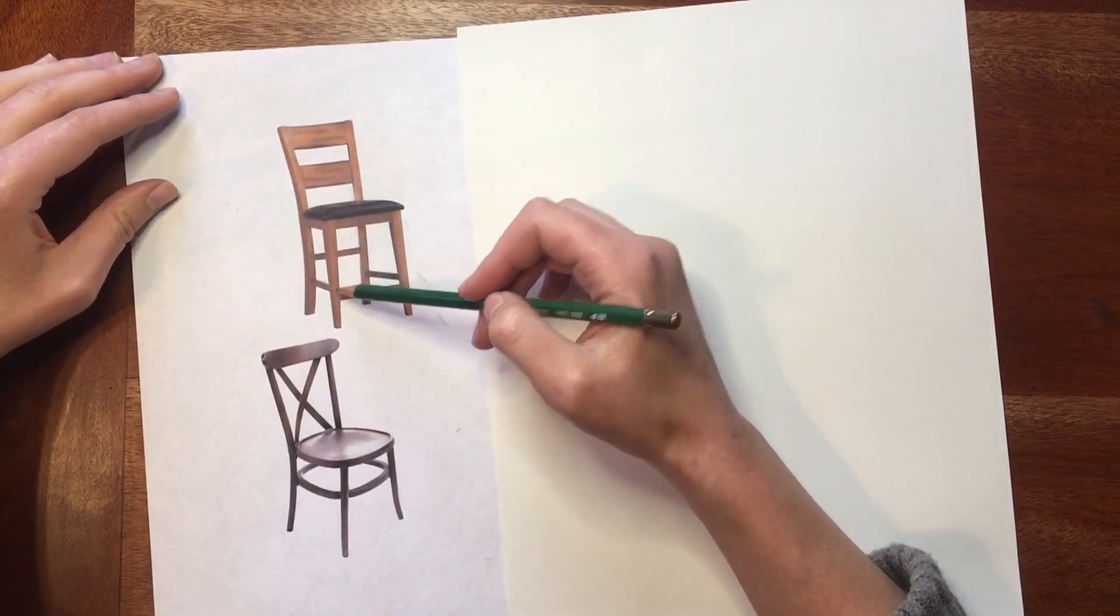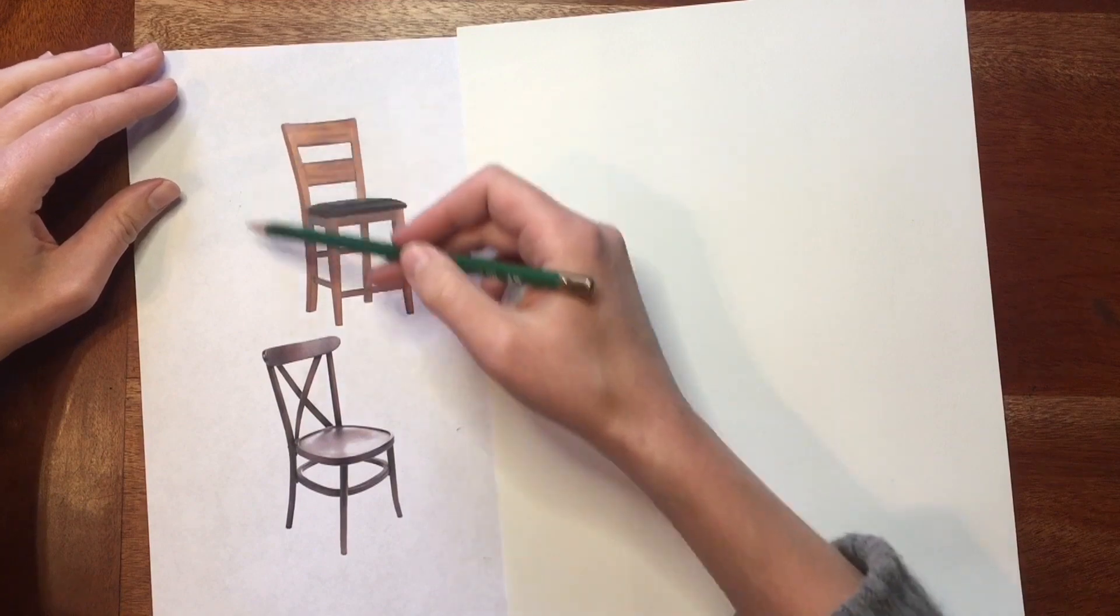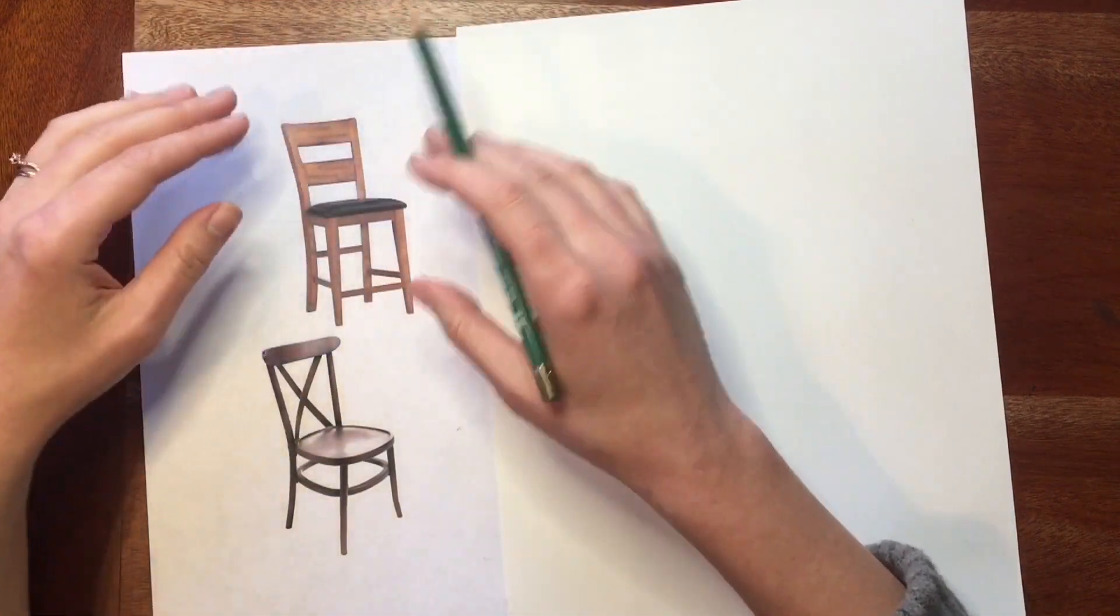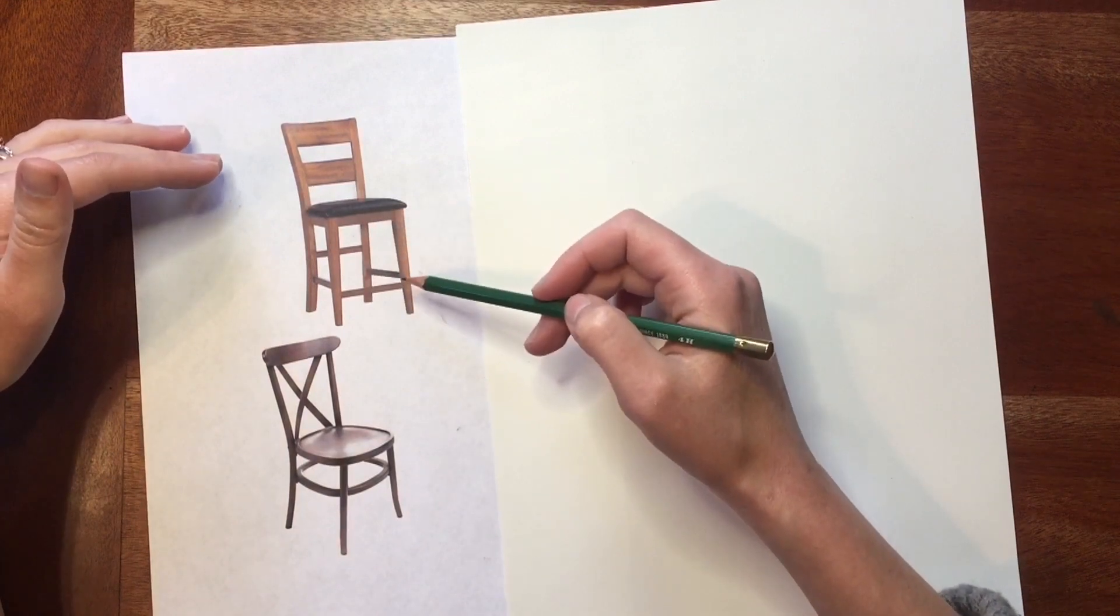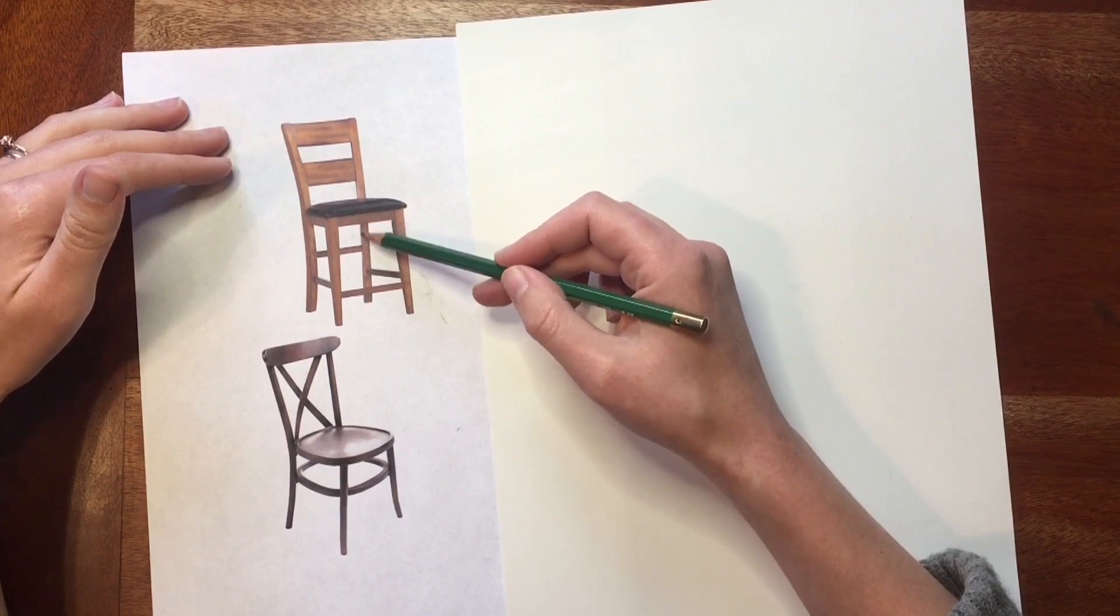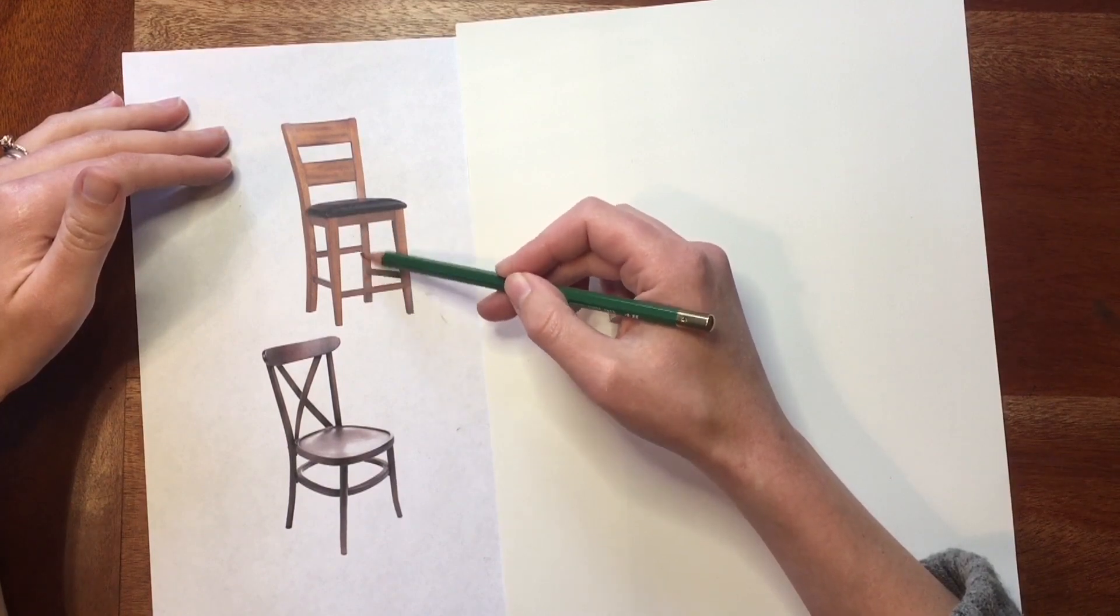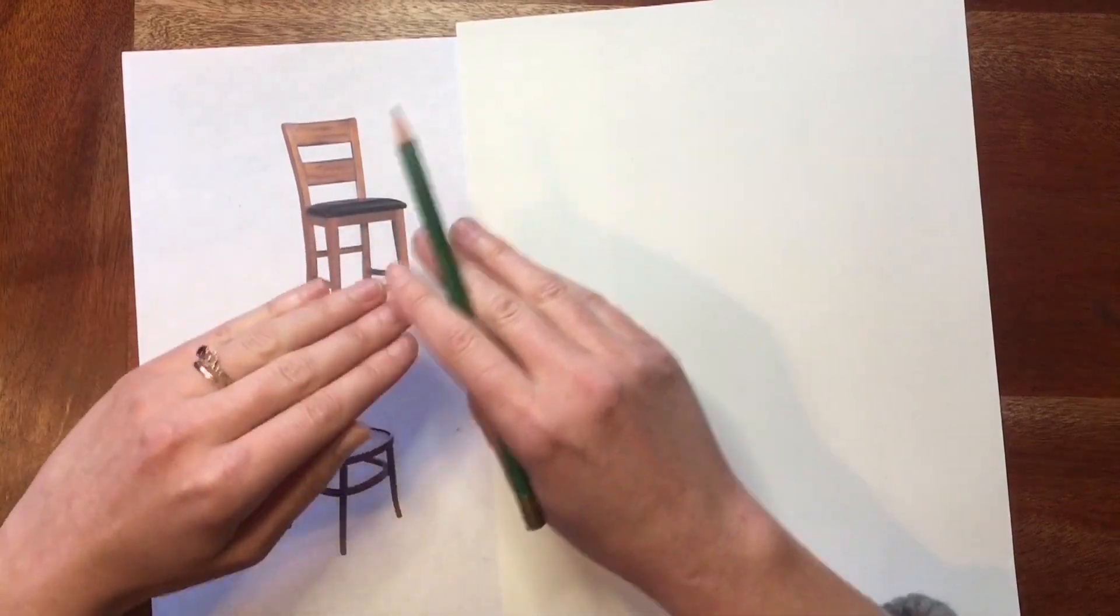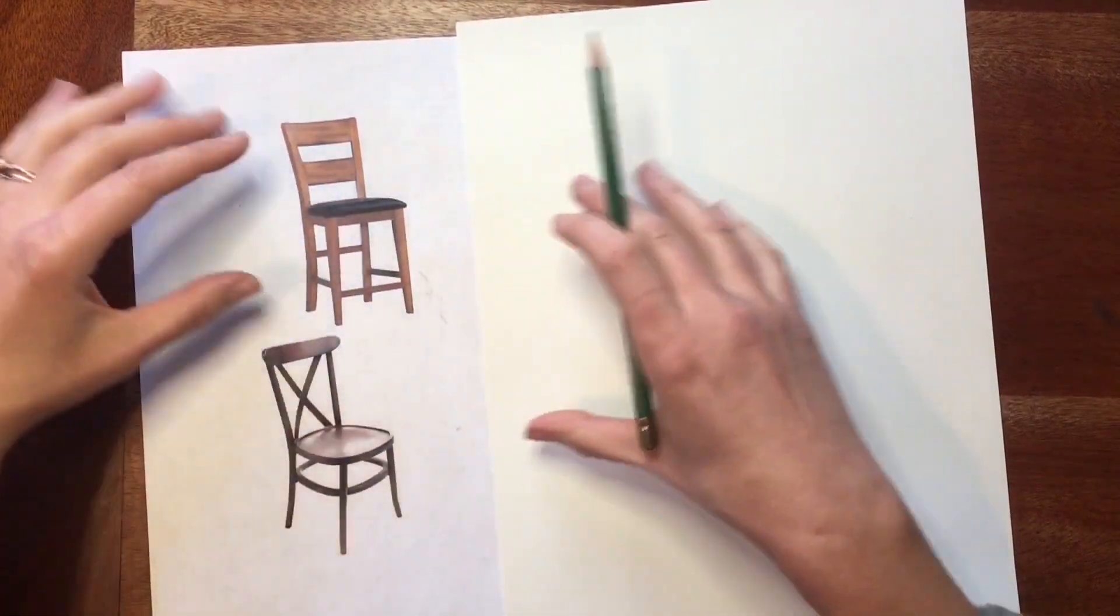Being able to think about both negative and positive space allows you to construct an image more like a puzzle than like just separate pieces. I can see what the shape of this puzzle piece is and how it relates to the shape of this puzzle piece, so that everything can really neatly fit together. It can really tighten up your work.